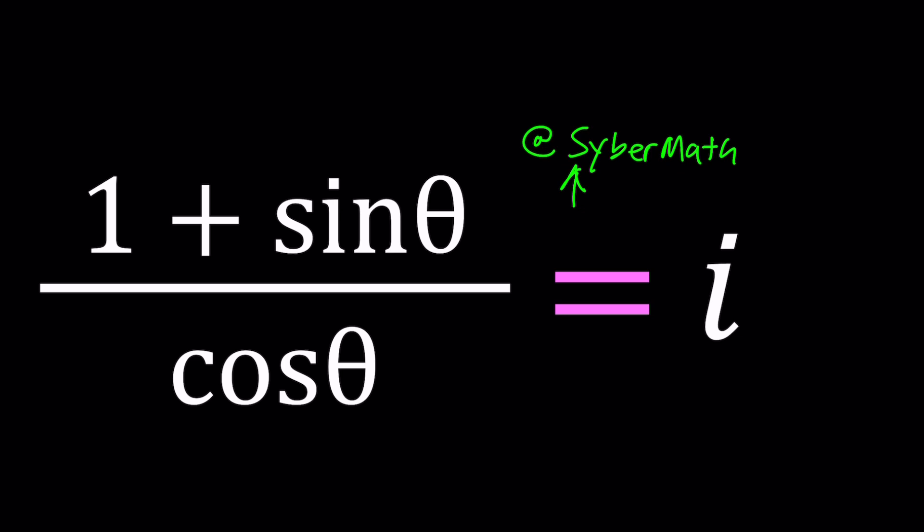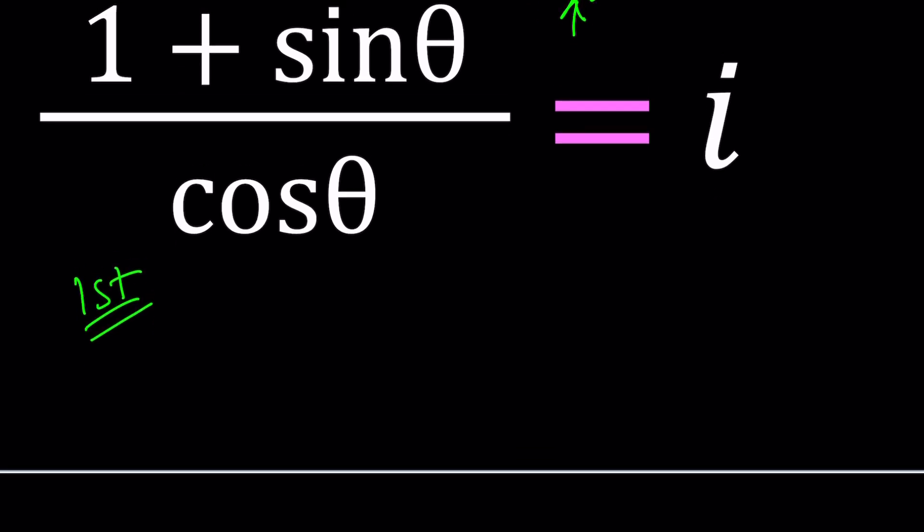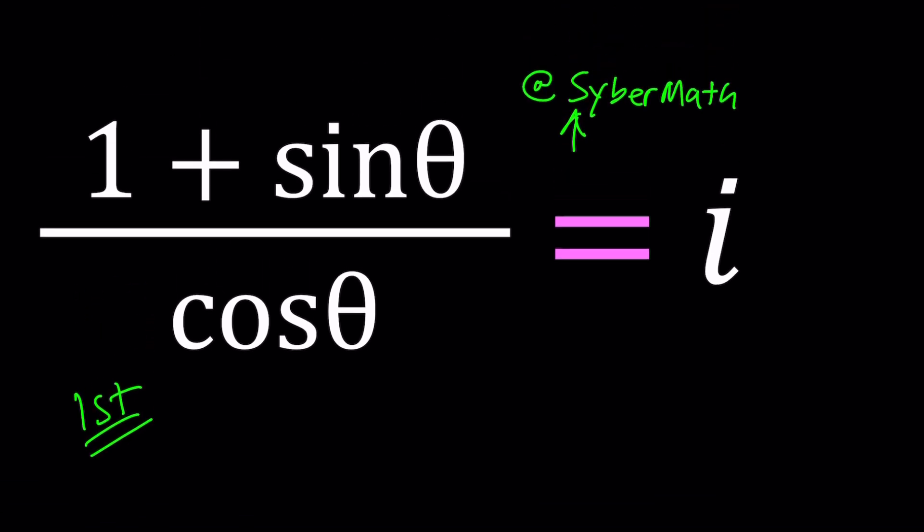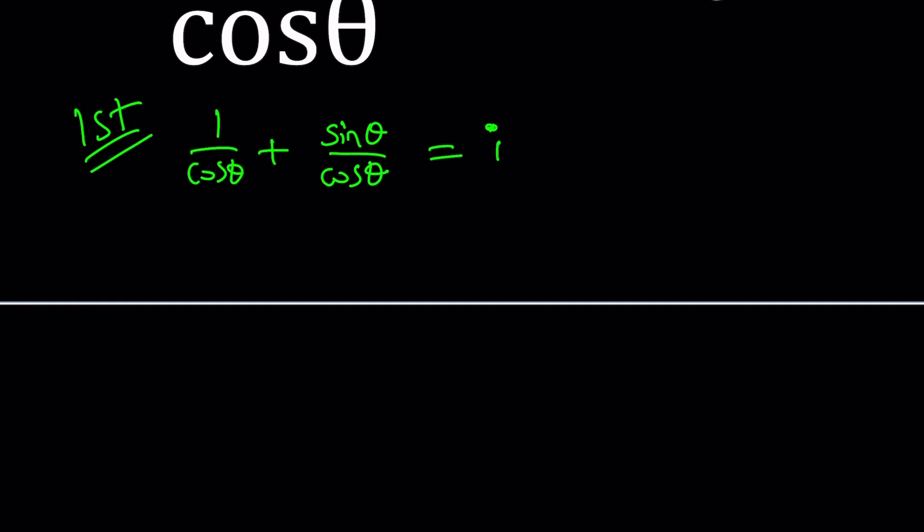For my first method, I want to split this up into two fractions: 1/cos θ plus sin θ/cos θ. As you know, if you have something like this, you can always split it up—it's kind of like the opposite of adding. So now we're going to look at it separately.